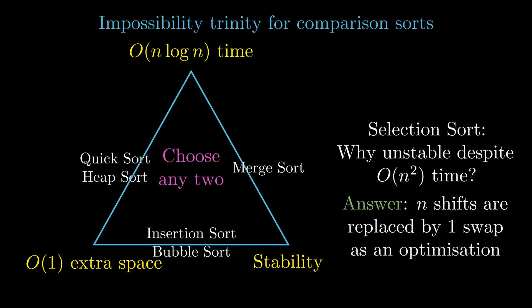If we switch it to n shifts, then it will be a stable algorithm while still retaining O(n²) complexity and O(1) space. Have a look at the more material in the description of this video.